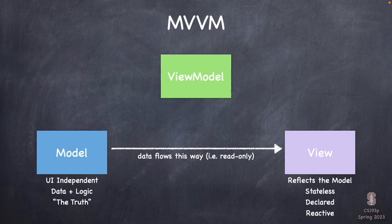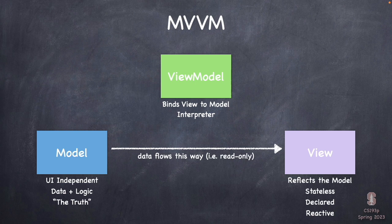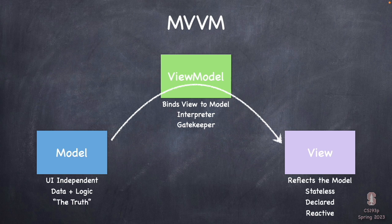In MVVM, we introduce the view model to bind the view to the model. Its job is to connect these things to each other. Data flows read-only from model through view model to view. The view model is not only binding them, it's also interpreting them — for example, converting SQL into normal variables so the view can see them. It's a gatekeeper between the two, protecting the model so the view can never do anything bad to it.